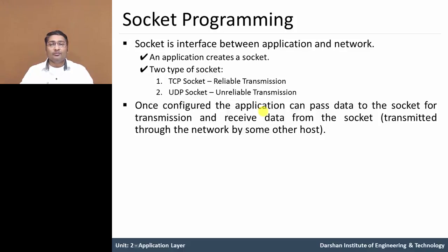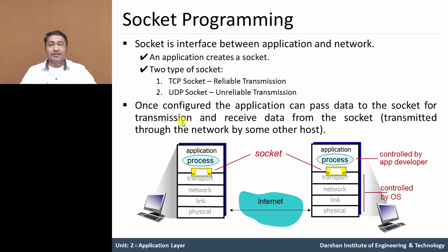So from one host, data is sent using a socket and passed to another host, which receives the data using a socket. As shown in this figure, the application process sends data to the socket for transmission, and the receiving data from the socket is received from the lower layer — the transport layer — up to the application process.